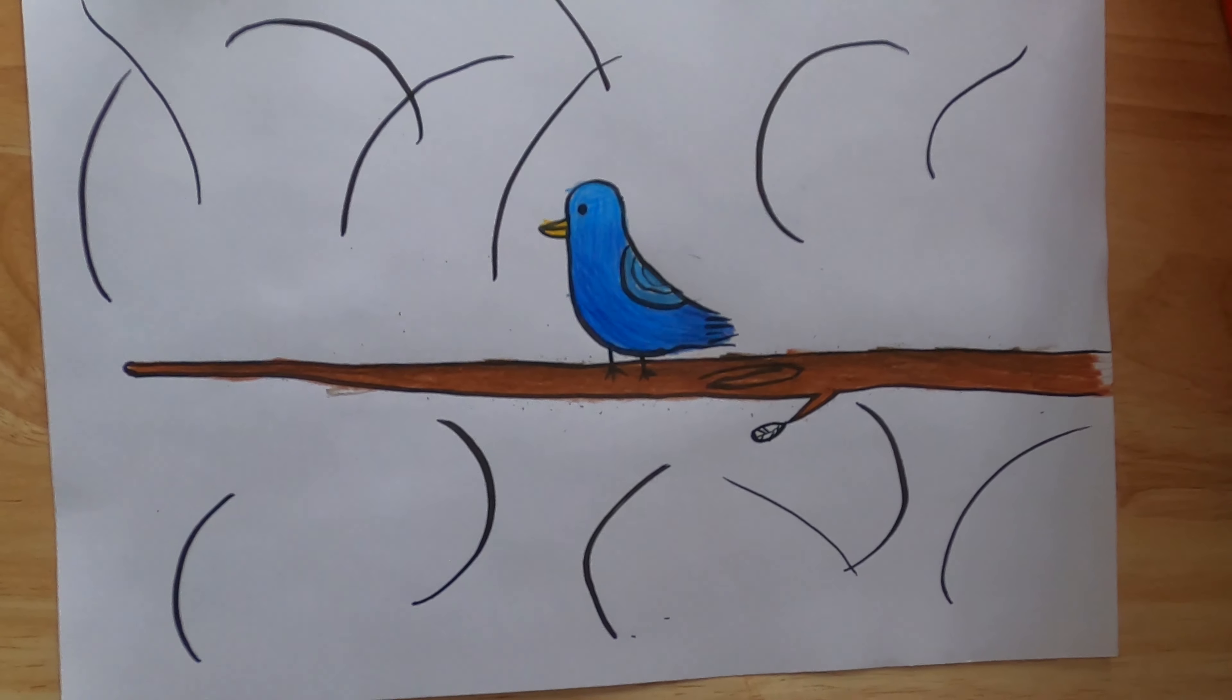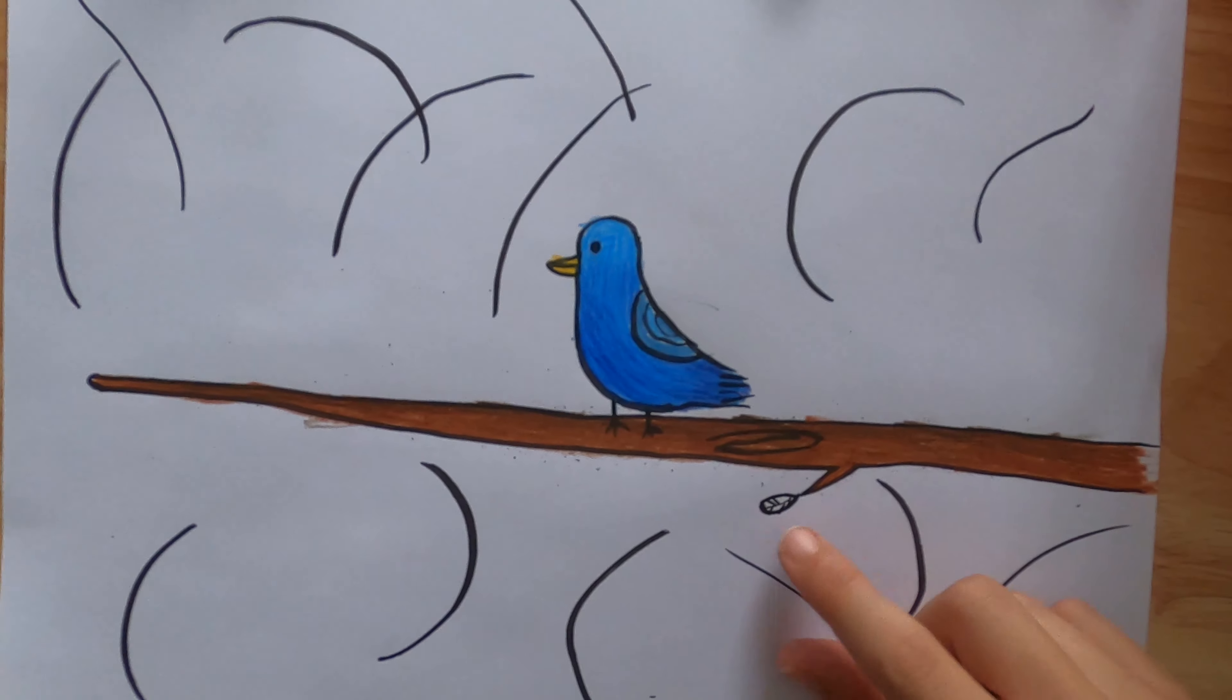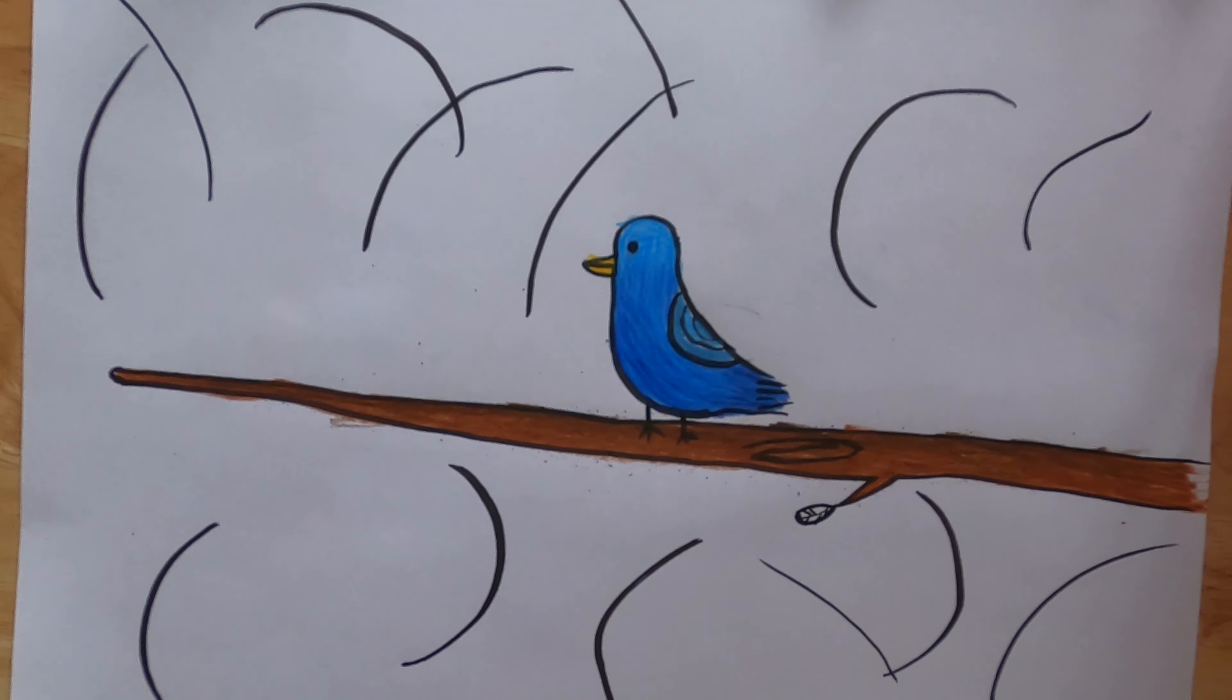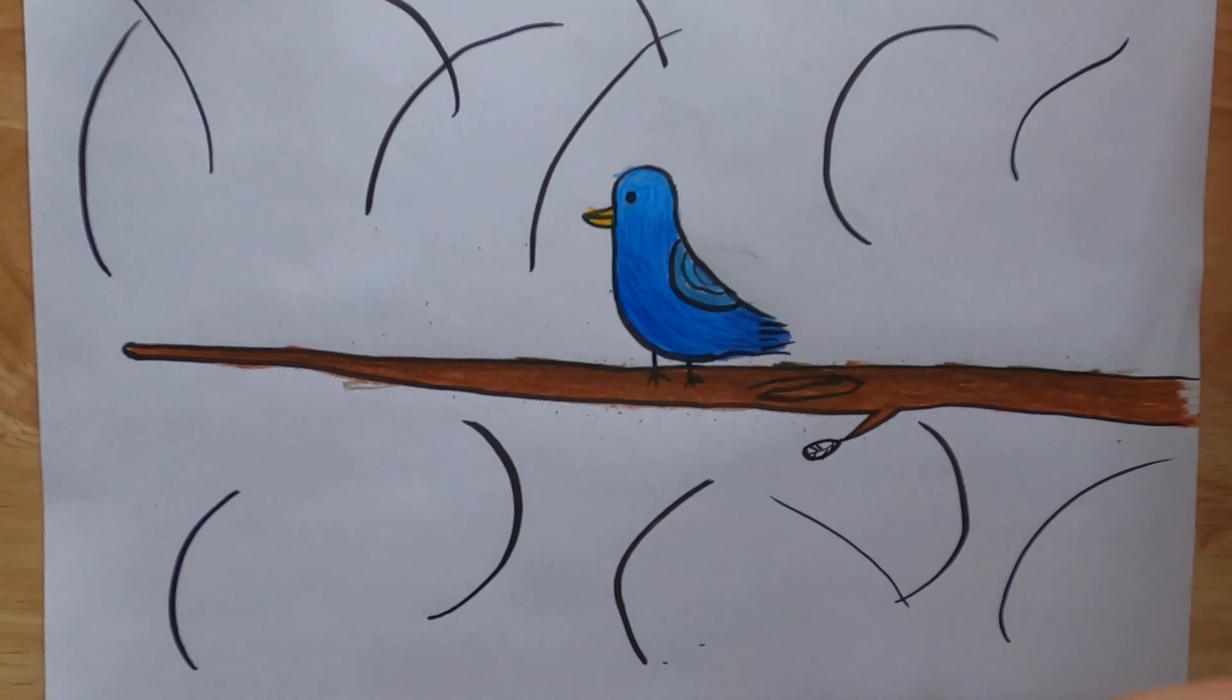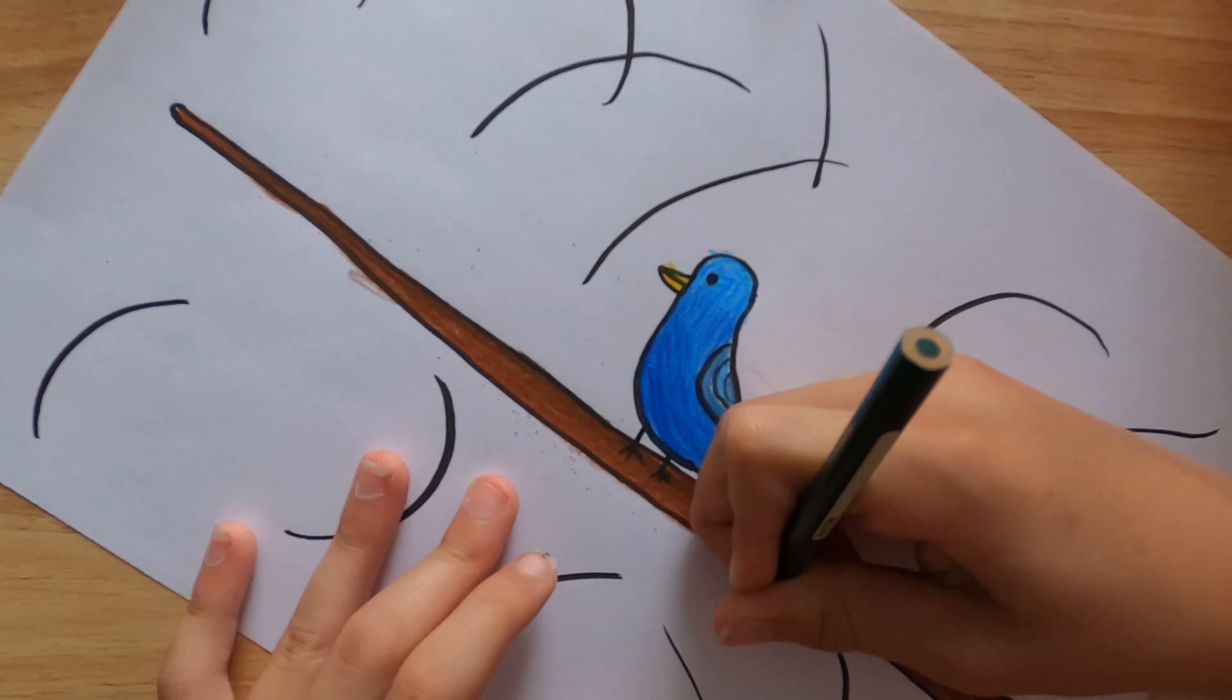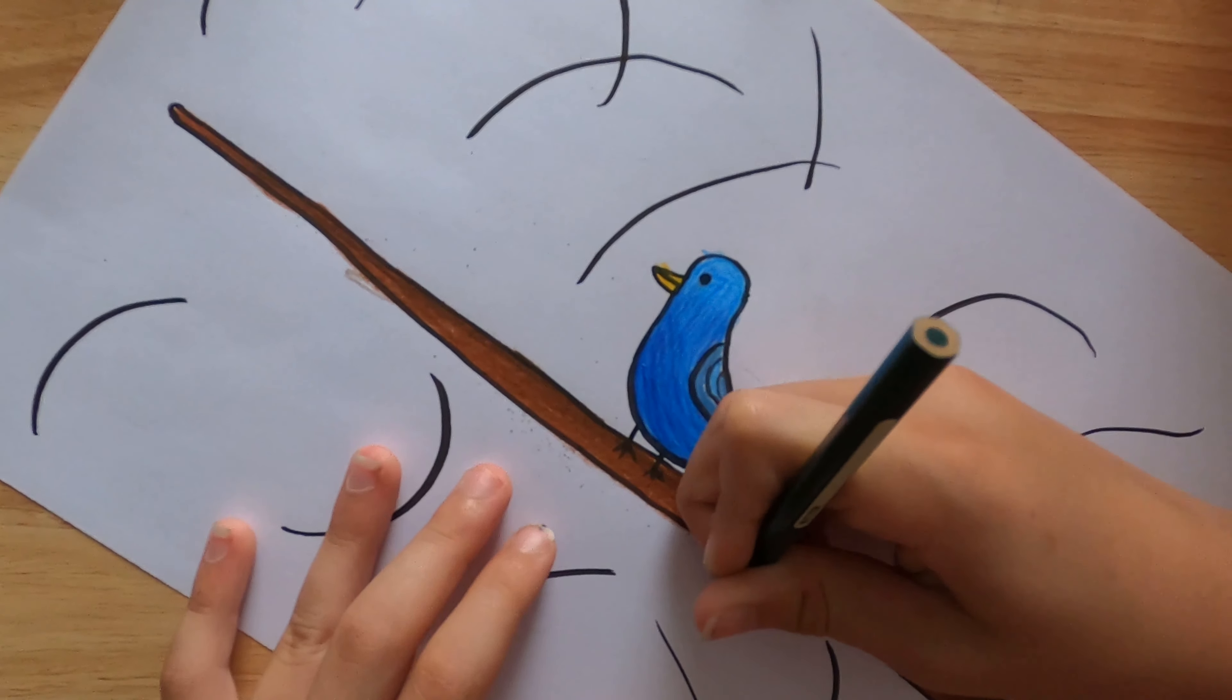Now we want to add our leaf. So we're going to get a green, just color it in half by half.